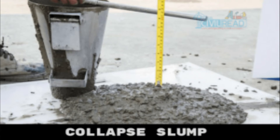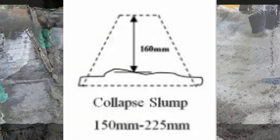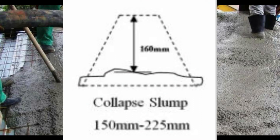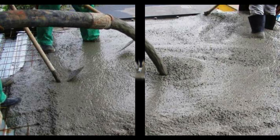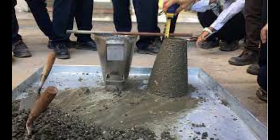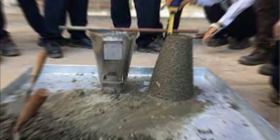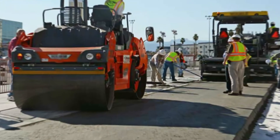Shear slump may occur in the case of a harsh mix. In a collapse slump, fresh concrete collapses completely. This is an indication that the water-cement ratio is too high — such a concrete mix is too wet, or it is a high workability mix for which the slump test is not an appropriate test. Zero slump is the indication of a very low water-cement ratio, which results in dry mixes.